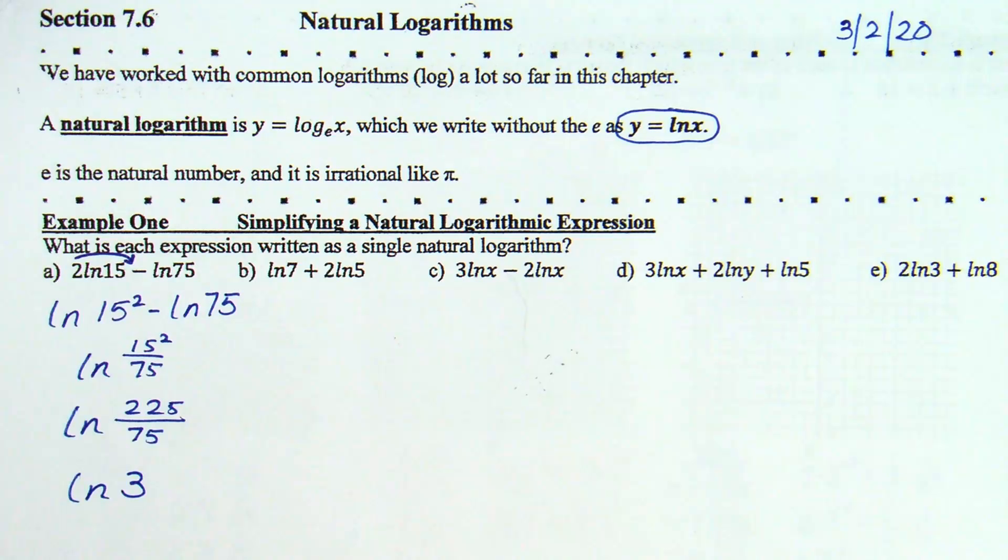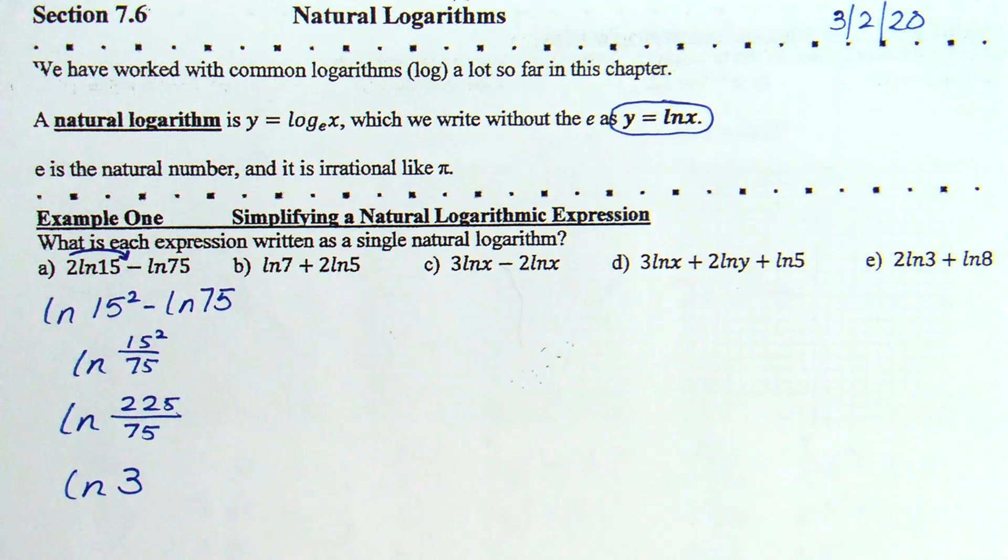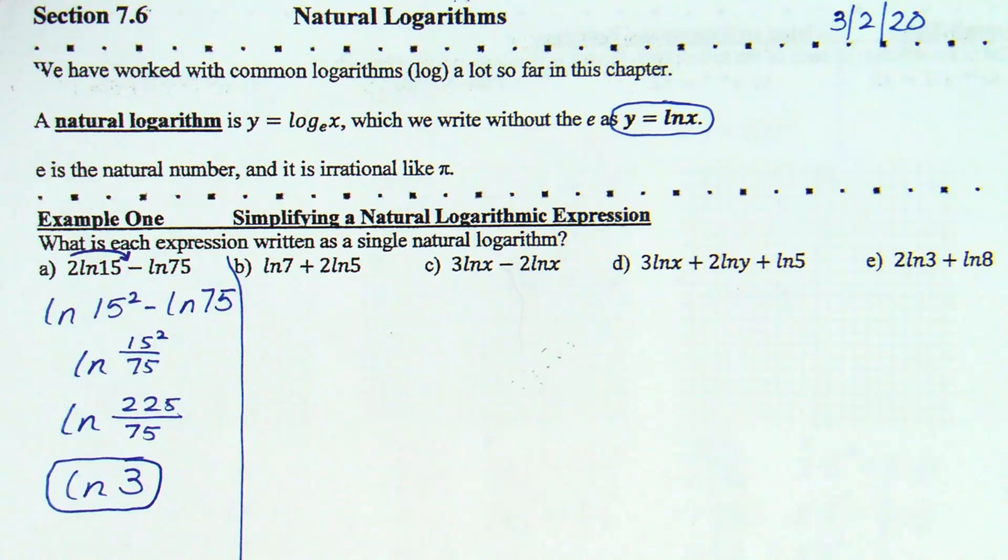Anything else I can do? You could, if you needed to, find the natural log of 3 in your calculator and give me a decimal answer. However, what are the directions asked? What is this expression written as? A single natural log. So, what did I just do? It's a single natural log. So, we are actually done here. If it asks me for a decimal answer, then yes, we could take it and put it into our calculator. Does that seem familiar with what you've done before? It should.